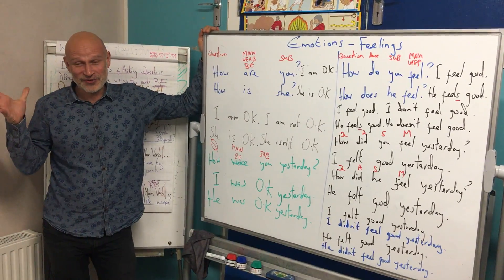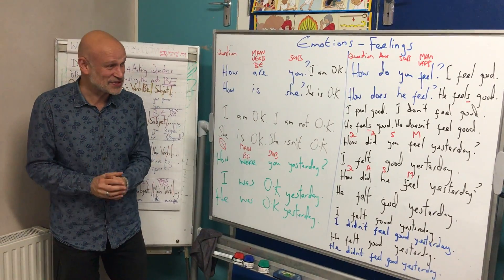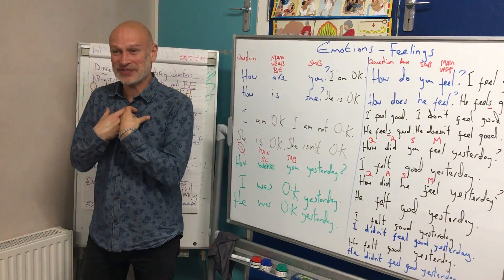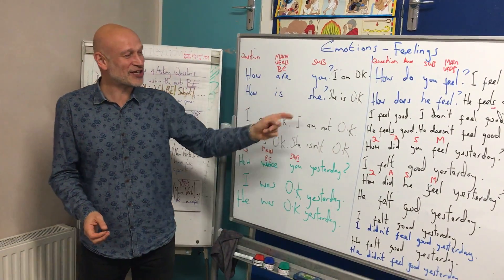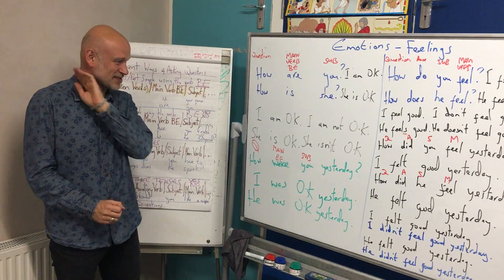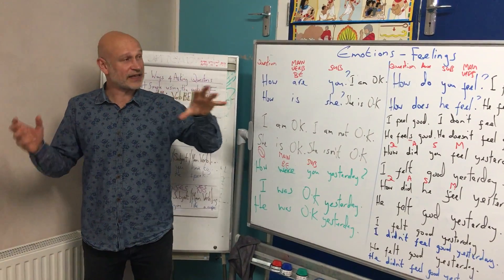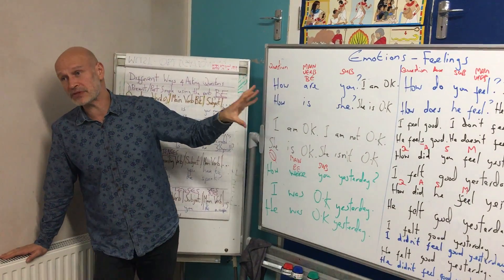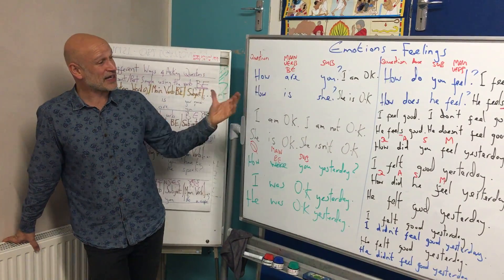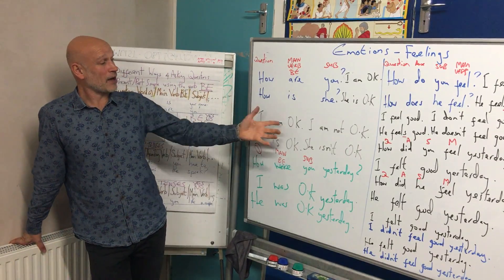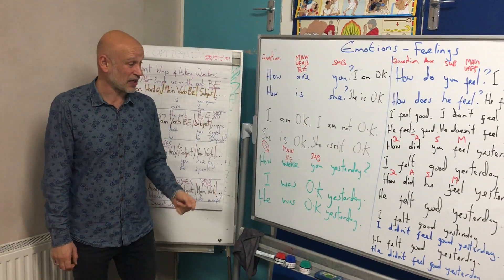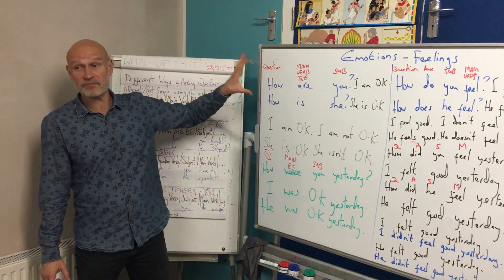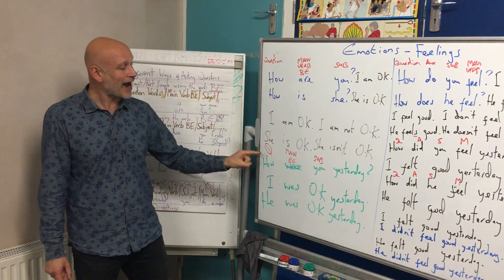We are confused — that's okay! We're talking about feelings and emotions today, and we can use the verb 'to be' to talk about these things. I am okay, she is okay. Negative: I am not okay, she is not okay. This is the present simple. In the past simple, how were you yesterday?